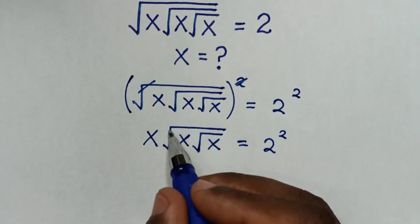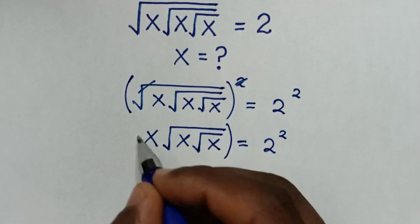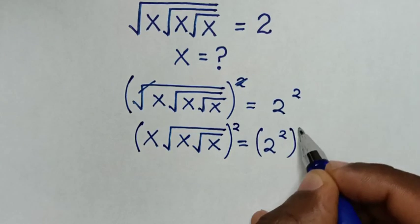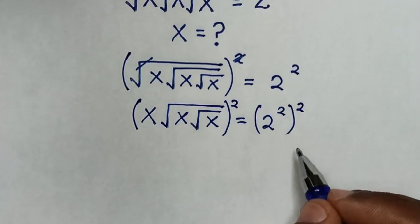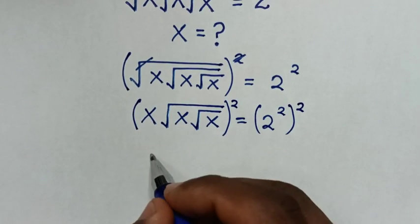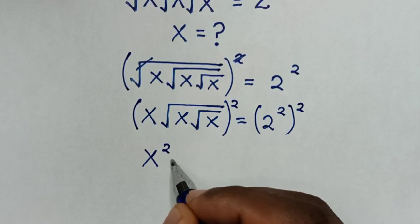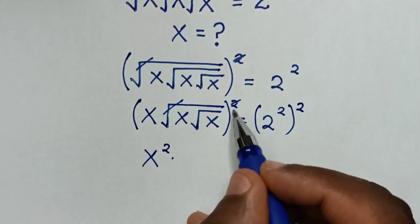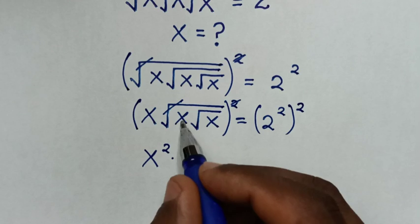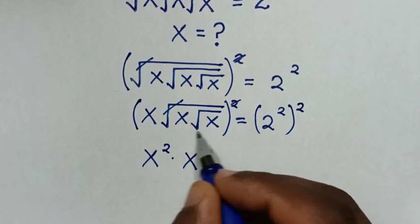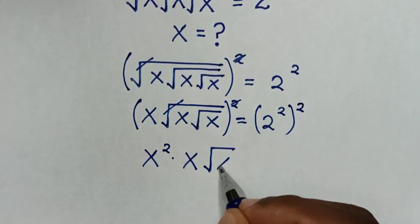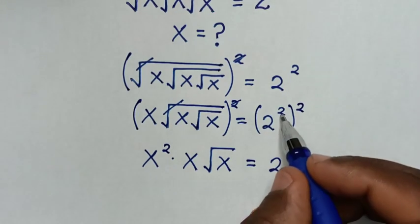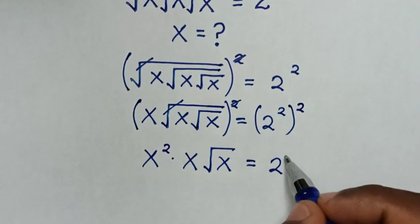Then again, to cancel this square root we will multiply by squaring both sides. So it will be x squared, then this square root cancels with this square, giving us x times square root of x equal to 2 to the power of 2 times 2, which is power of 4.